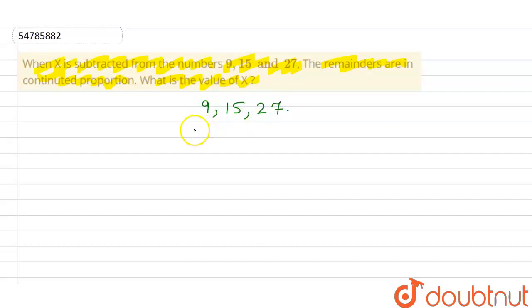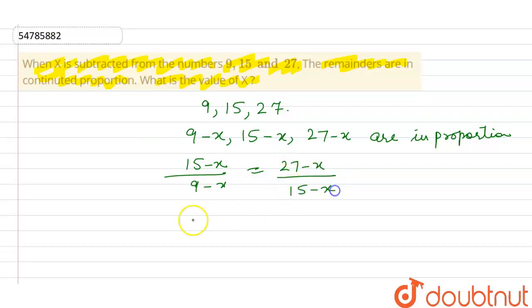If you have 3 numbers, x will be subtracted, then this will be the numbers. Now these numbers are in proportion. So proportion, how do we write them? 15 minus x upon 9 minus x equals 27 minus x upon 15 minus x.